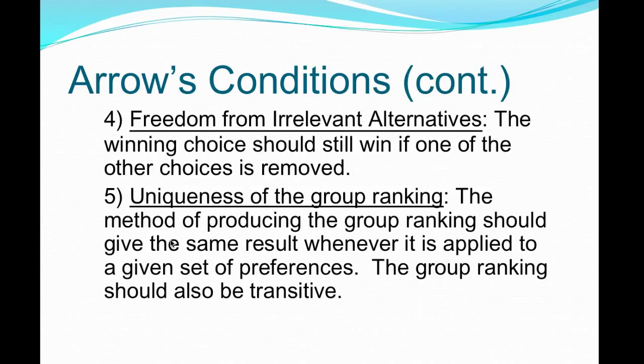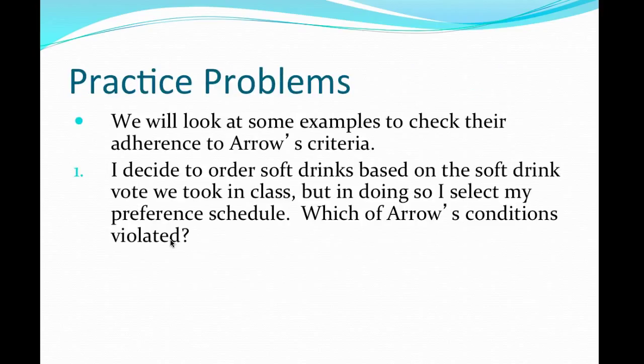The group ranking should also be transitive. For example, if the Vikings beat the Bears and the Bears beat the Packers, does that mean the Vikings beat the Packers? Not necessarily, but in math, five is greater than four and four is greater than three, so five is greater than three — that is the transitive property. Sometimes it doesn't hold in elections.